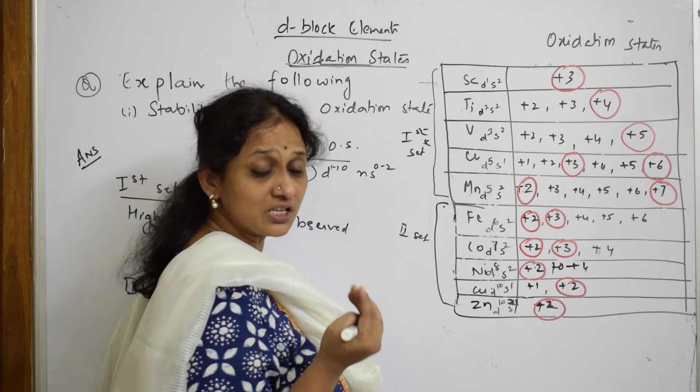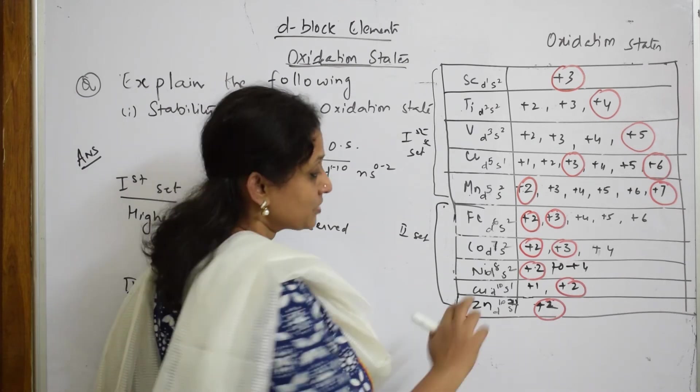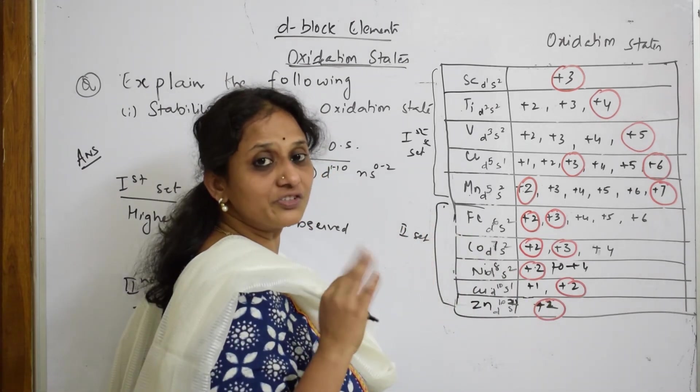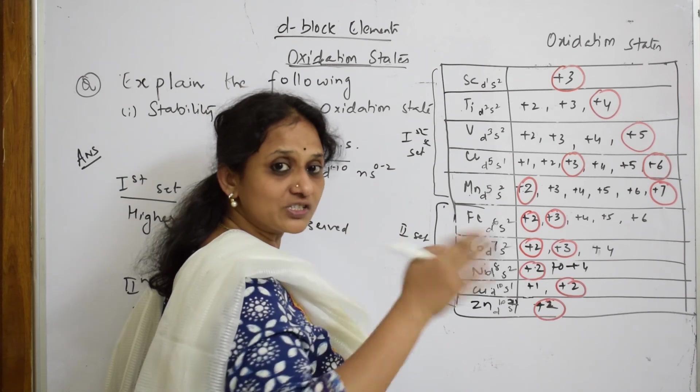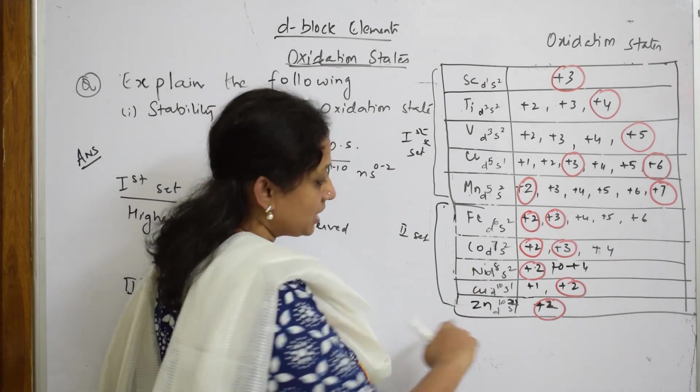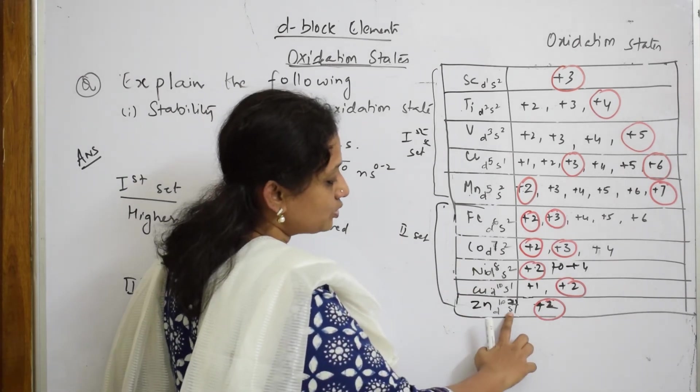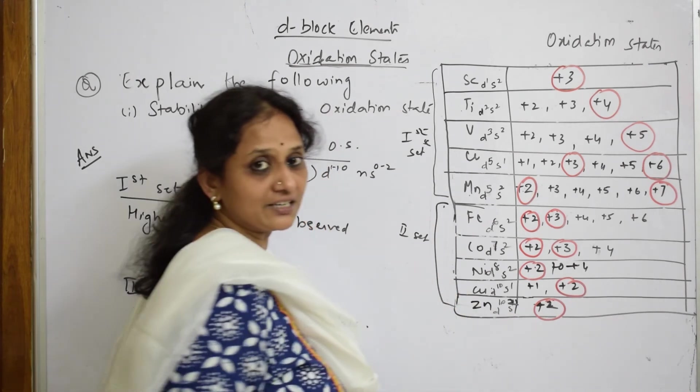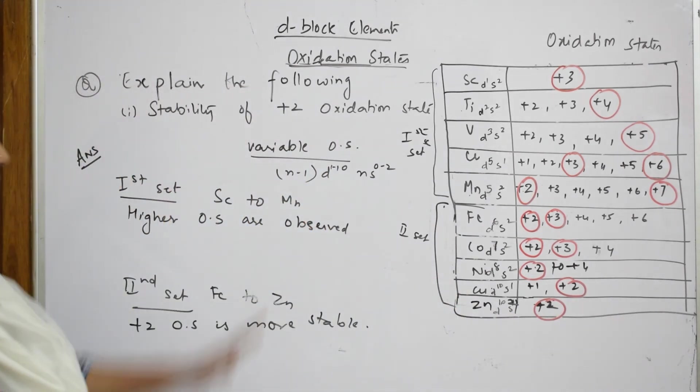Then it attains 3d10 stable configuration. Now if I have to compare that in aqueous solution, compared to Cu+ and Cu2+, Cu2+ is more stable because of the disproportionation reaction which it shows, which I explained in one of the equations.